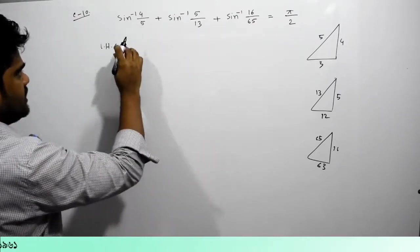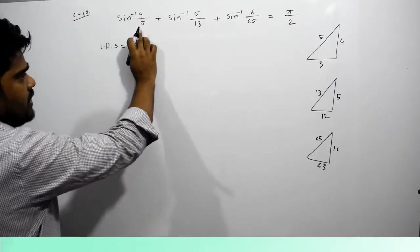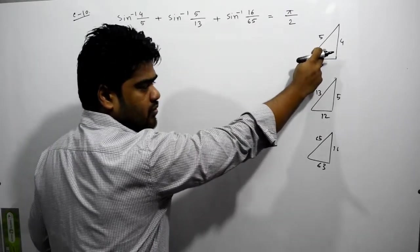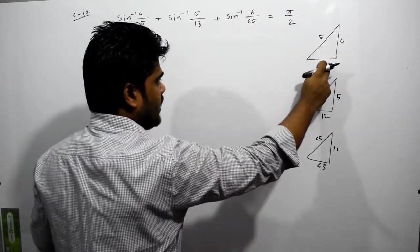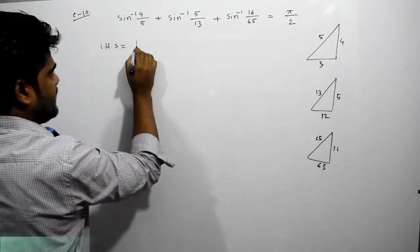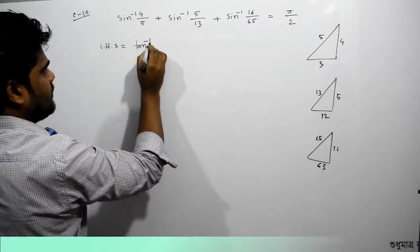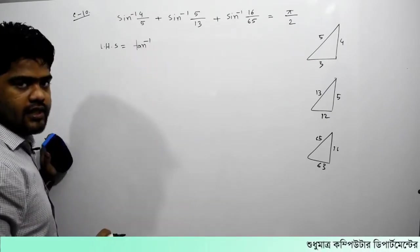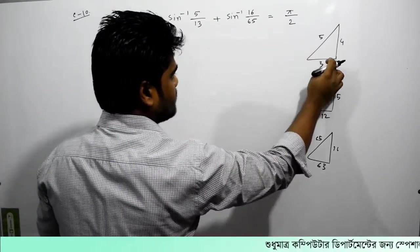Sin inverse 4 by 5, where sin inverse, the left side will be used in this area. So the left side will be used in this area, so we will put tan inverse 4 by 3.